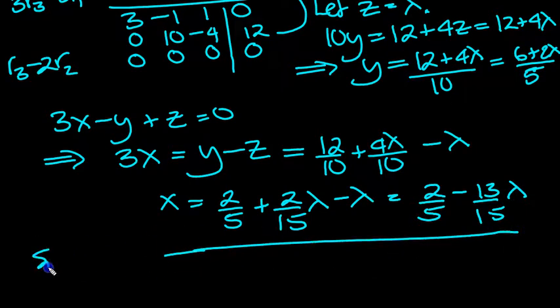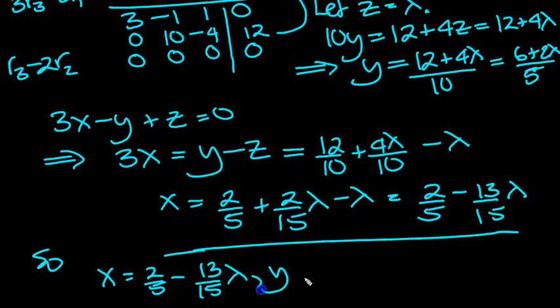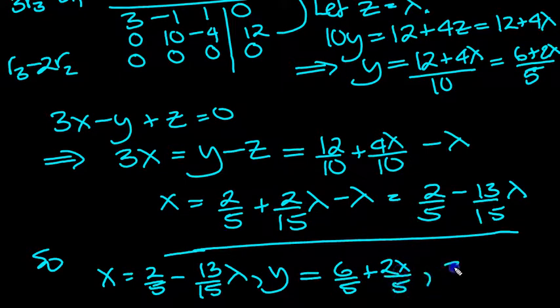So then what have we got? x equals 2 fifths minus 13/15 of lambda, y is equal to 6 fifths plus 2 lambda over 5, and then z was equal to lambda. There we go, there's the solution set now at the end of the problem.